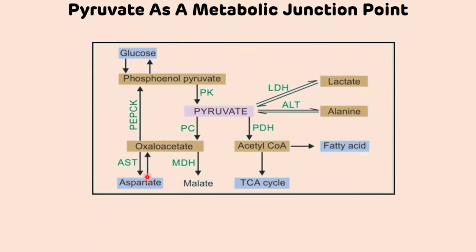Pyruvate occupies an important junction point for many metabolic reactions. Pyruvate can be decarboxylated to acetyl-CoA by the pyruvate dehydrogenase enzyme. This acetyl-CoA can enter into the TCA cycle for its complete oxidation. Alternatively, acetyl-CoA can be utilized for fatty acid synthesis.